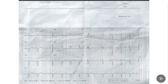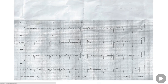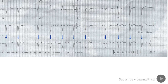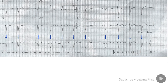This is an ECG recorded from a patient with recurrent episodes of syncope. Heart rate is 66 beats per minute with irregular rhythm. This is showing heart block type 1, or Wenckebach phenomenon. The first conducted P wave PR interval duration is 200 milliseconds or five small squares.